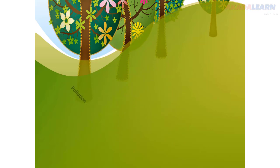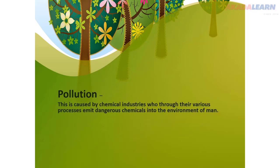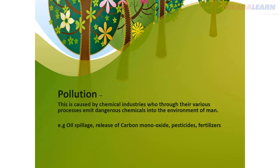Another adverse effect of chemistry to humanity is that it causes pollution — land pollution, air pollution, and water pollution. Any activity that renders any part of the environment unfit for human use is termed pollution. Activities of chemical industries that emit dangerous chemicals into the environment make it unfit for human use. Good examples include oil spillage and the release of carbon monoxide from pesticides and fertilizers used in our farms.